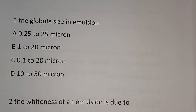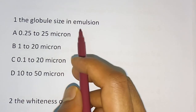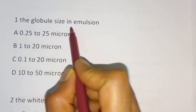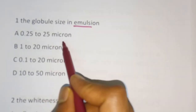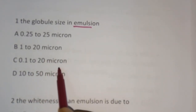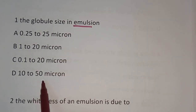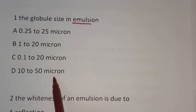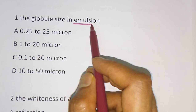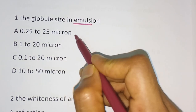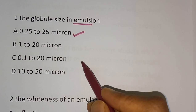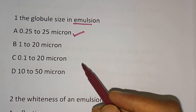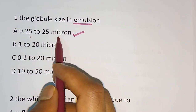The first question: the globule size in the emulsion. Options are 0.25 to 25 micron, 1 to 20 micron, 0.1 to 20 micron, and 10 to 50 micron. The correct answer is option A — in case of emulsion, the globule size varies from 0.25 to 25 micron.